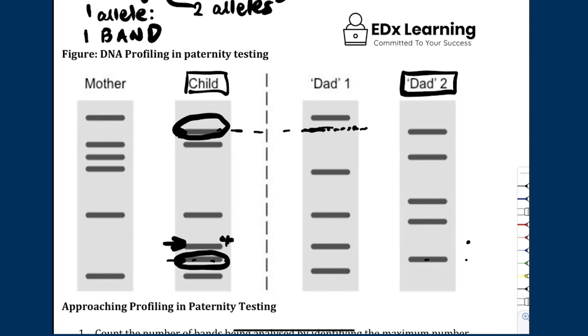So the way you interpret these questions is one band equals one allele, and a band can either be inherited from the mother or the father. If it's not inherited from the mother, it must come from the other parent. That's how simple it is to interpret these. Does that make sense?